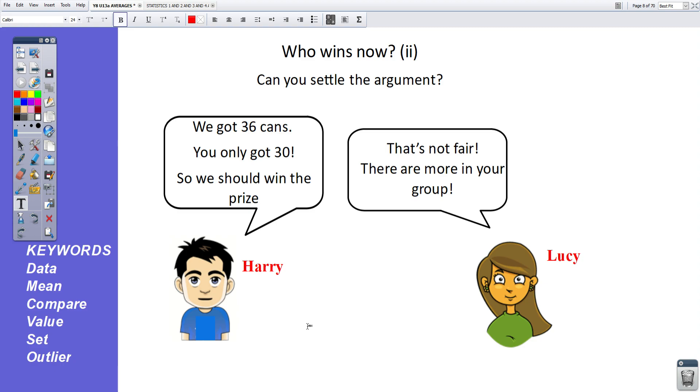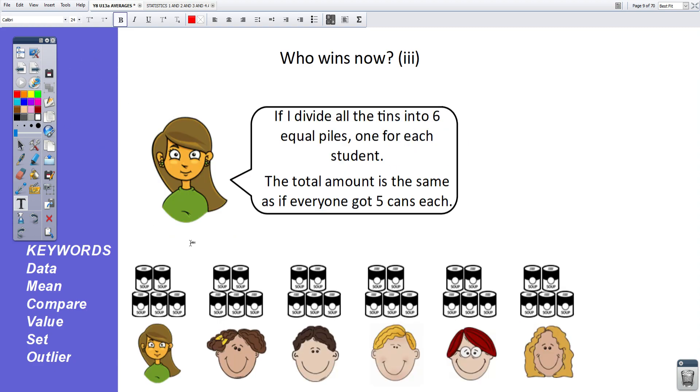Based on the earlier example where there were three people in each group, that would sound reasonable. However, Lucy quite rightly is turning around and saying that's not fair. There are more people in your group. Lucy then goes on to do a calculation. If I divide all the tins into six equal piles, one for each student, the total amount is the same as if everyone got five cans each.